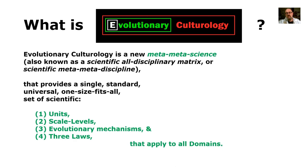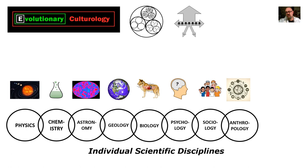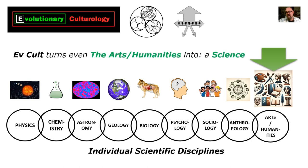Recap: what is Ev Cult? A meta-meta-science — a single standard, universal, one-size-fits-all set of scientific units, scale levels, evolutionary mechanisms, and three laws that apply to all domains, even the arts and humanities. The meta-meta-science of Ev Cult applies to everything and thus solves consilience, the unity of knowledge, because you have the same units for all domains. That means you have individual scientific disciplines from physics, chemistry, and astronomy all the way up to anthropology, and then Ev Cult turns even the arts and humanities into a science because of the universal units, scale levels, evolutionary mechanisms, and three laws, which are equally applicable to all.